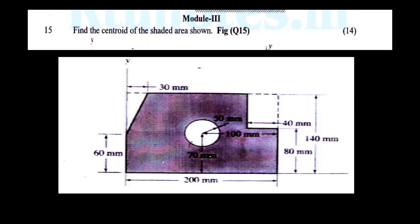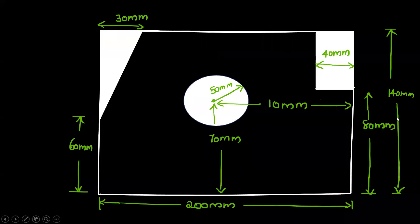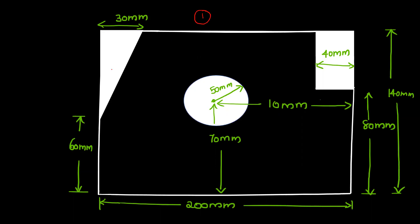Find the centroid of the shaded area. The whole rectangle is shown and I will identify the shaded region. We have to find the centroid — we have to close the black areas. We have to consider the triangle, the rectangle, and the semicircle. We separate each body: first body, second body, third body, and fourth body.